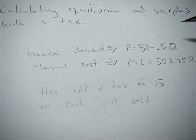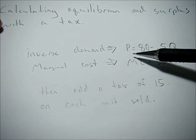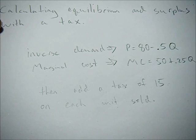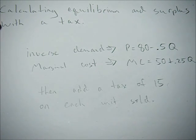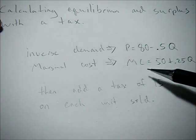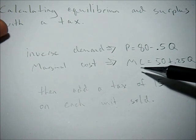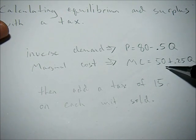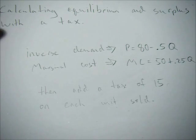So first, our question is that we have an inverse demand function, so price equals 80 minus 0.5Q. So it's downward sloping, which is good. Our marginal cost function, or kind of our supply function, is marginal cost equals 50 plus 0.25Q, and it's upward sloping, which is good. So we're going to use these numbers to calculate equilibrium quantity and price and consumer and producer surplus. Then we're going to add a tax of 15 on to each unit sold. So let's get started.